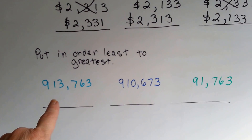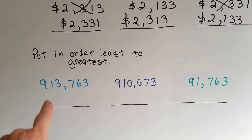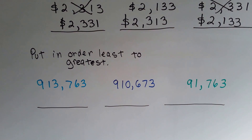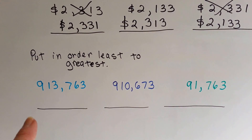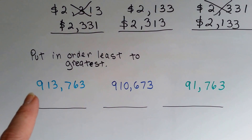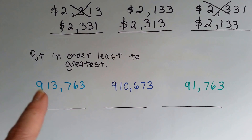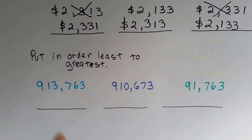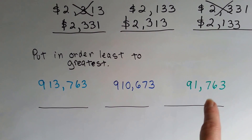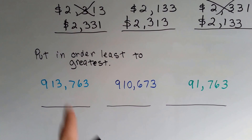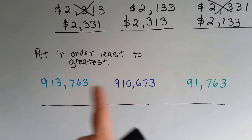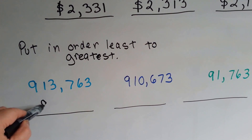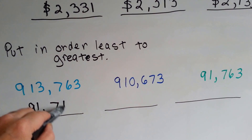Now let's put them in order from least to greatest. So we want the smallest number in the first space. Whichever number has the most place values is the biggest, and whichever number has the biggest digits in that place value is the biggest. If you said this one, you're right, because it doesn't have as many place values as the others. These both have six digits, but this one only has five, so it's the smallest and goes first: 91,763.